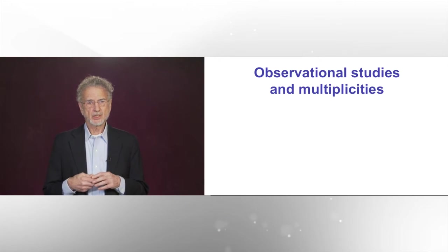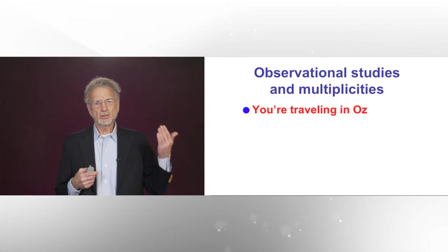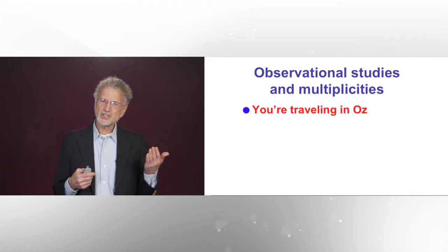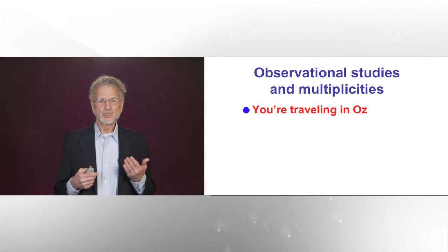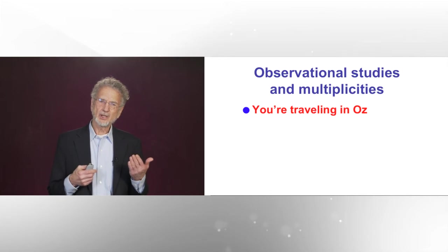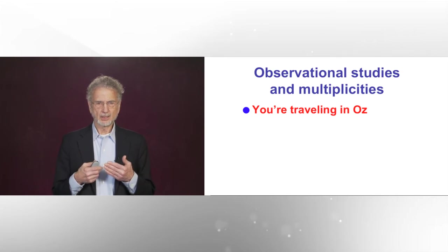Observational studies and multiplicities. Suppose you're traveling in a foreign land and you go through the town of Oz. You notice that in Oz, people seem to be tall — taller than in the rest of the country. So you go back, you want to do some research. You ask people their height and their age, and you compare to the country statistics. And you find that the average height in Oz is four inches greater than the rest of the country.